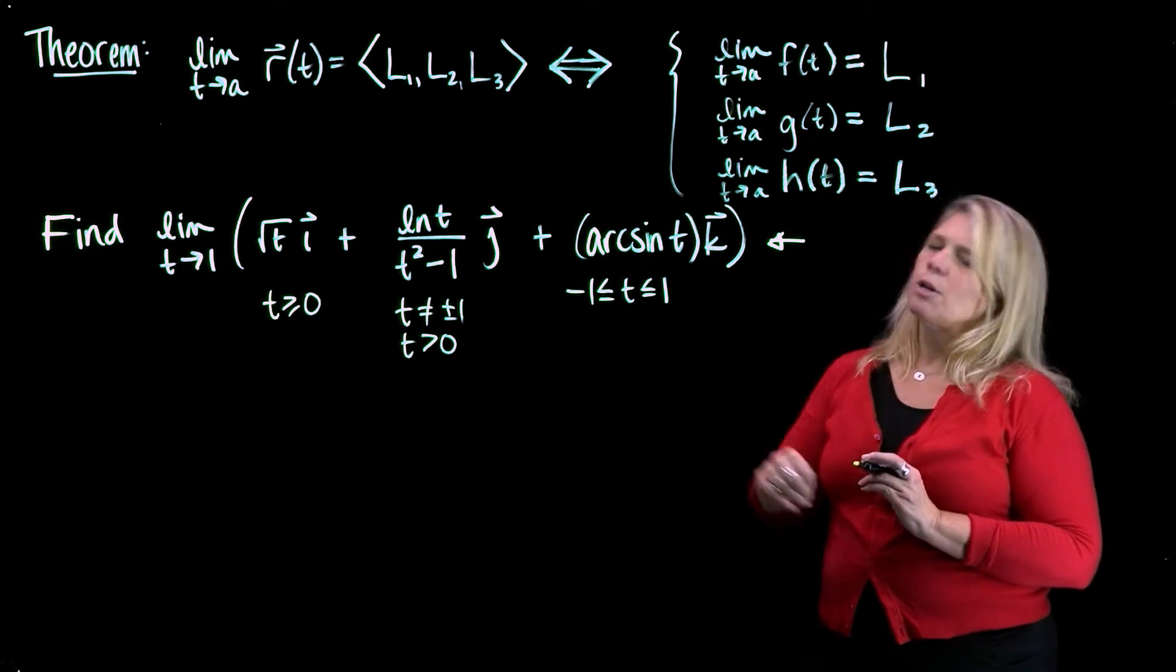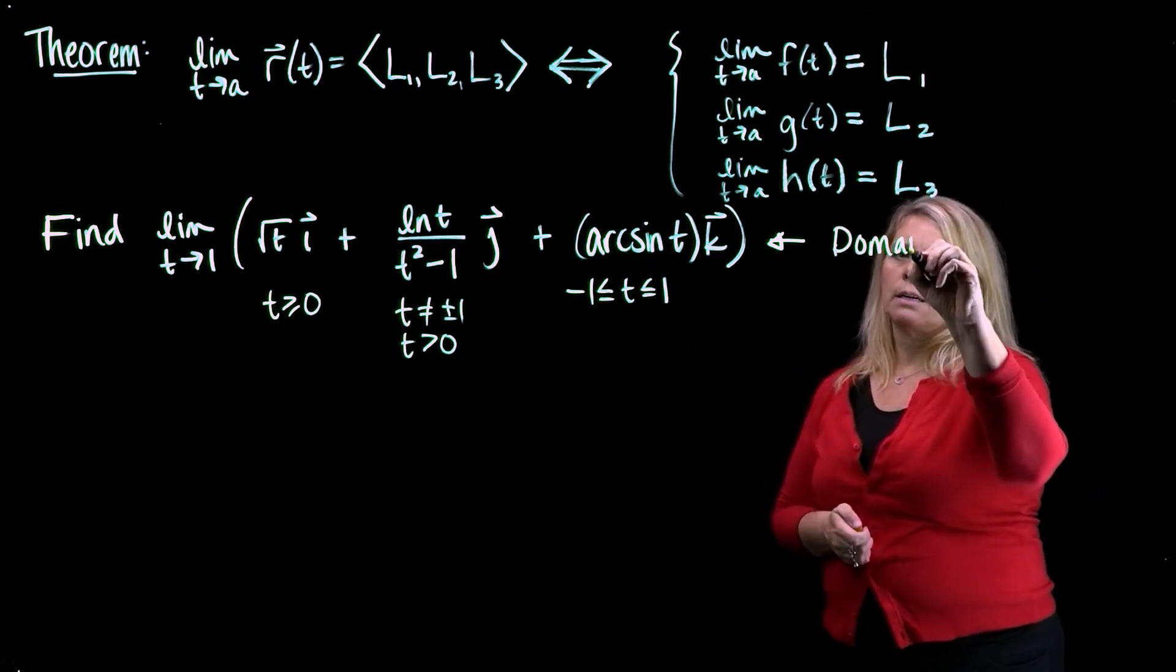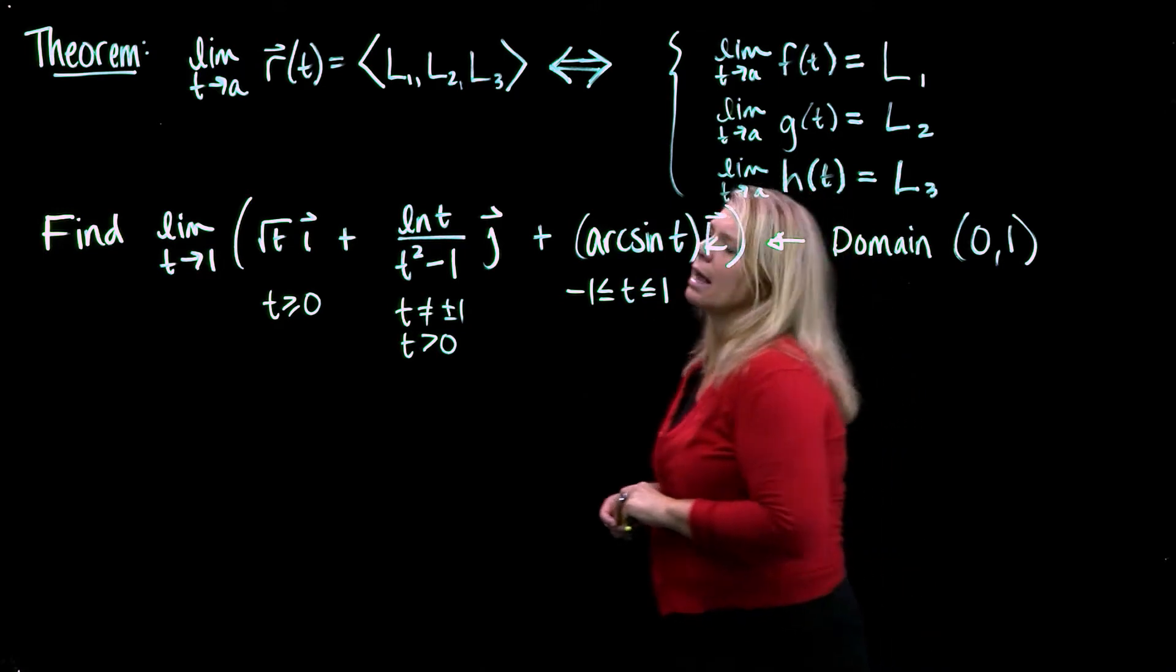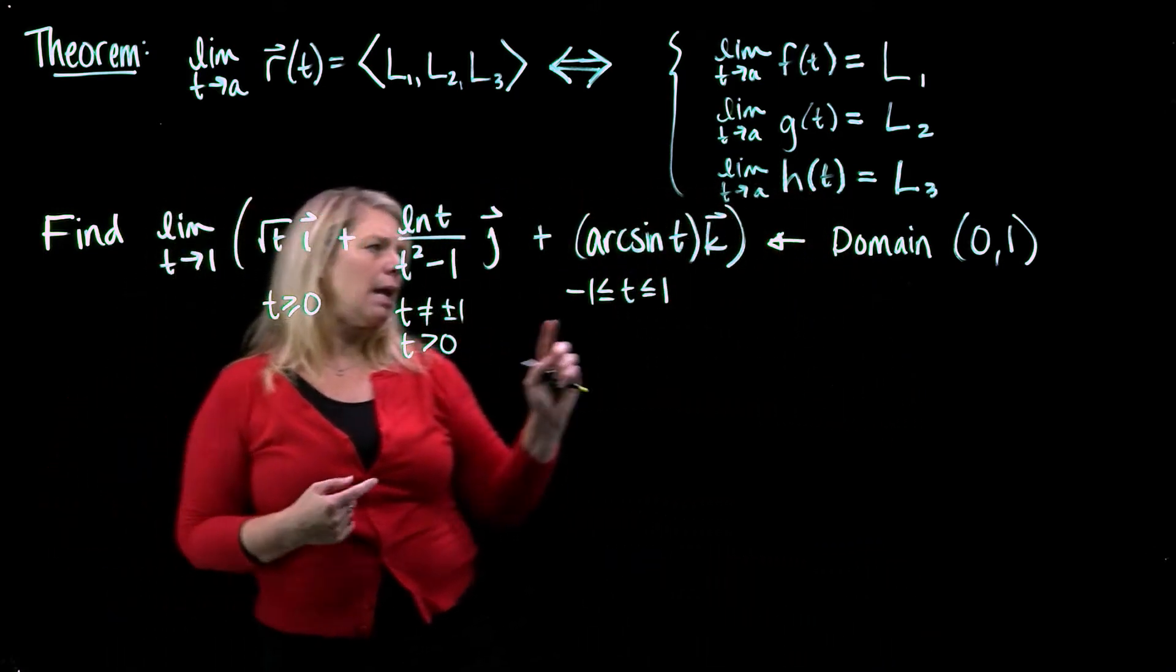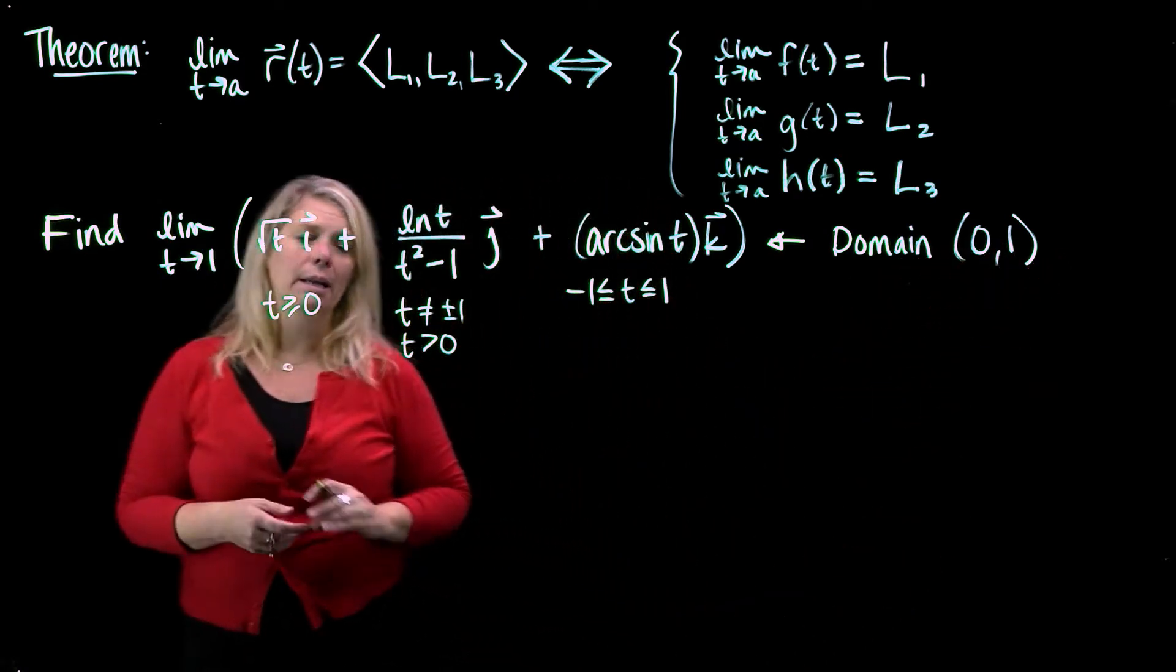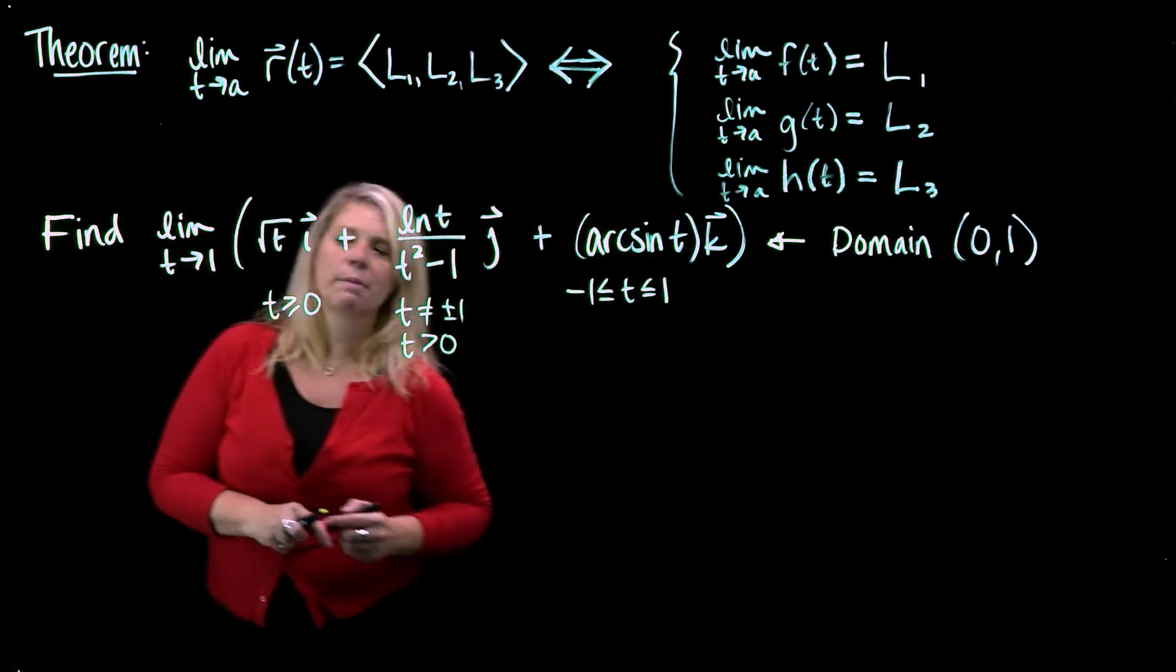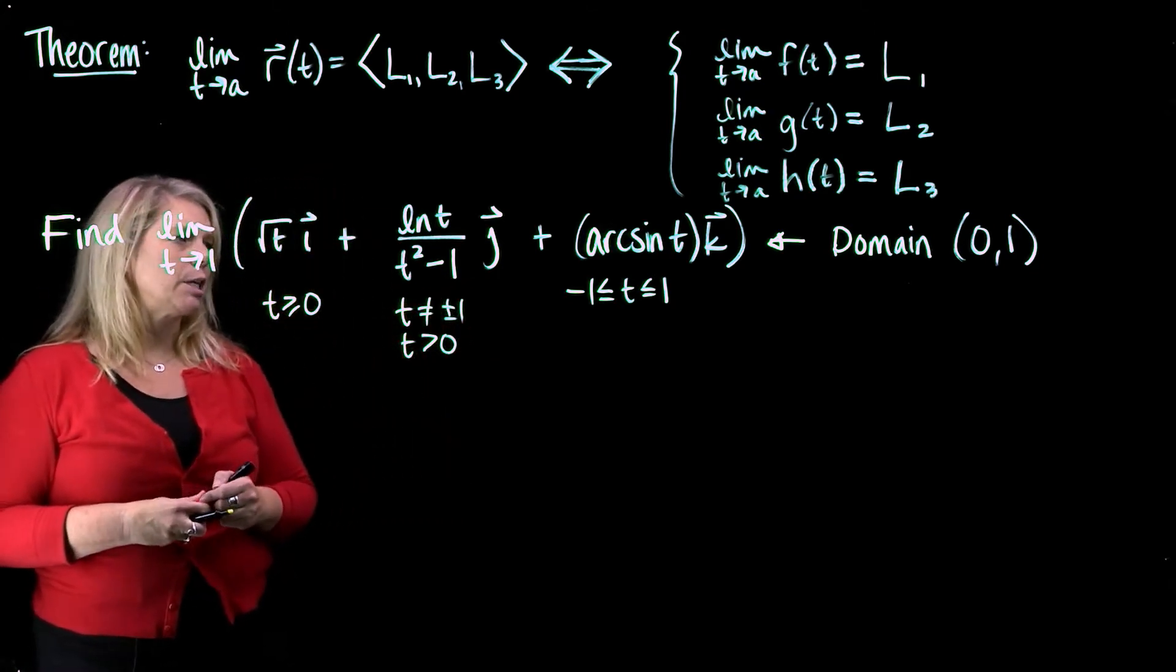we can see that the domain of this function really only is from 0 to 1. So technically, this limit, as it's written, we can't actually find because the domain doesn't exist on the other side of 1. And when we talk about a limit like this, remember that if it's not talking about one side or the other, then it really would be talking about the limit from both sides.